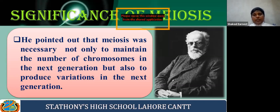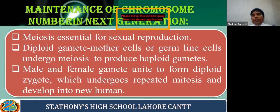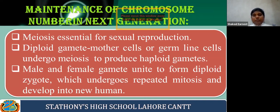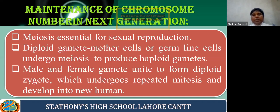Let's discuss the significance of meiosis in detail. The first significance is maintenance of chromosome number in the next generation. Meiosis is essential for sexual reproduction because it involves gamete formation — it occurs in germline cells. The diploid gamete mother cell, the germline cell, undergoes meiosis and produces haploid gamete cells.